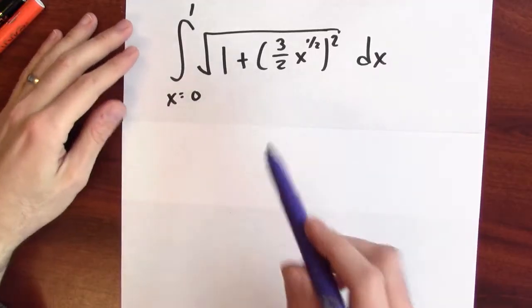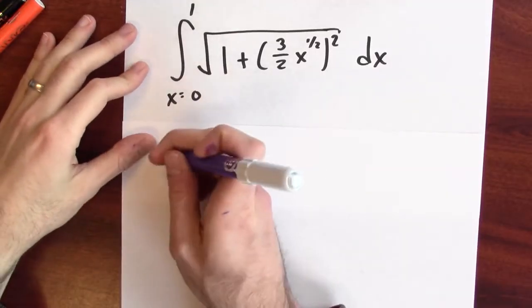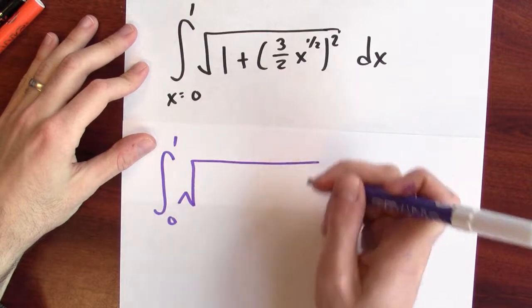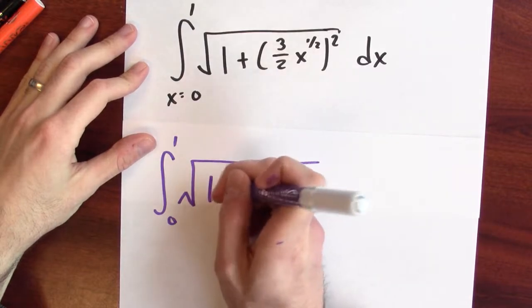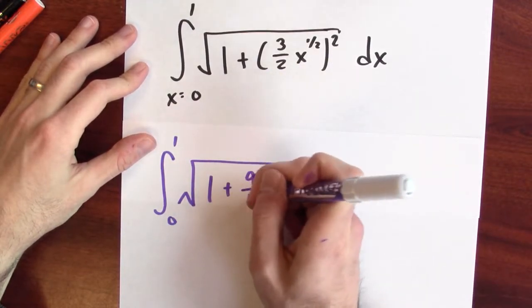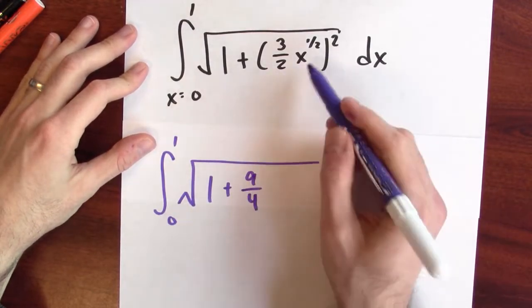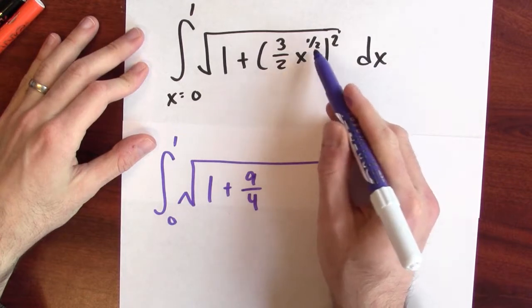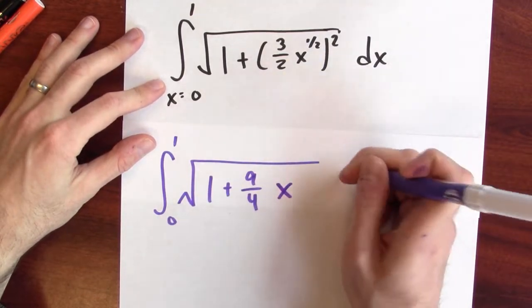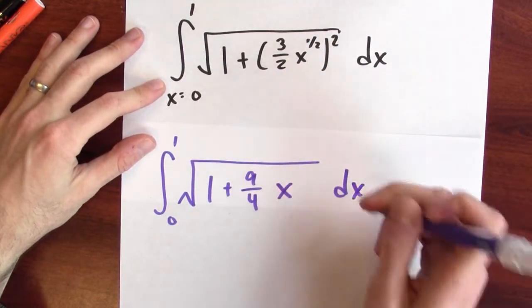Now I just want to compute that integral. I can rewrite the integrand. This is the integral from 0 to 1 of the square root of 1 plus — (3 halves) squared is 9 fourths — and x to the 1 half squared is just x, so we have the square root of 1 plus 9 fourths x, dx.